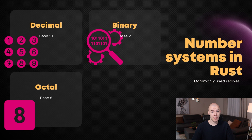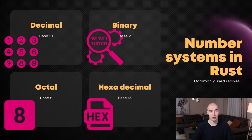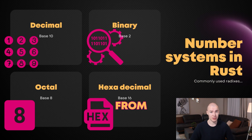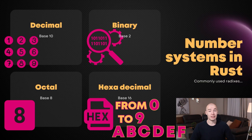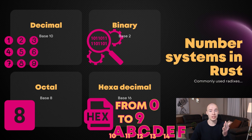Our final option is going to be the hexadecimal number system. For hexadecimal we basically have 16 different options — numbers from 0 all the way to 9 as in decimal, but after that we have a, b, c, d, e, and f. Those values are used to represent numbers 10, 11, 12, 13, 14, and 15, which gives us 16 different numbers.